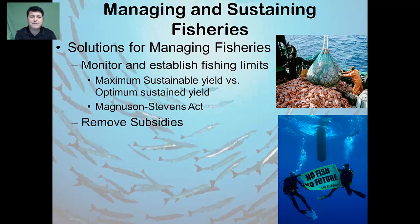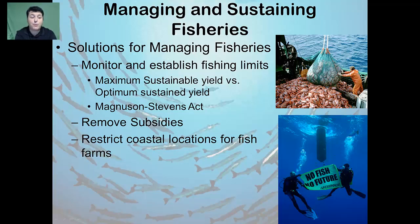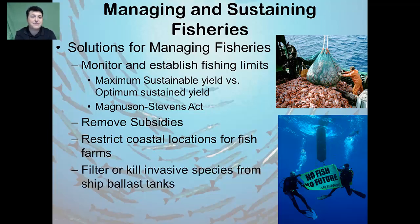Another major way that we can help to sustain our fisheries is through the removal of subsidies. Many governments continue to give their fishing fleets large subsidies to allow them to fish longer, harder, and further away than would otherwise be possible. Removing these subsidies would minimize the ability for fishing fleets to access fish and could be a major step to protect our world's oceans. We can also help by restricting where fish farms can go, which will protect not only coastal habitats but also the fishing stocks present there. Additionally, we can protect our fisheries from invasive species by mandating that large ships with ballast tanks filter or kill invasive species before they are released into shallow waters.